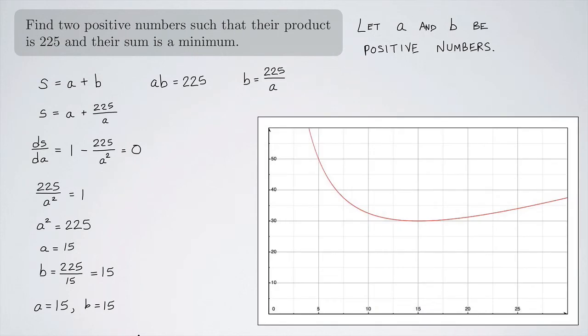We can look at this graphically. This is the function S of A - S as a function of A. So this is what the graph is showing. This is the S axis and this would be the A axis. And you can see that the minimum of this function does appear to be at 15, right about here. And you can see, if you look down here, there's 15. And the minimum sum is indeed at 30.